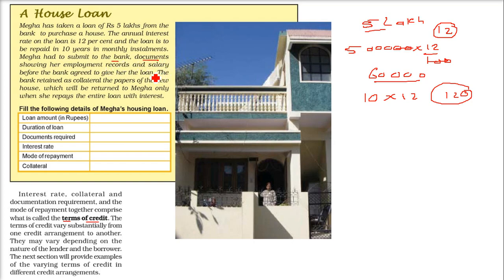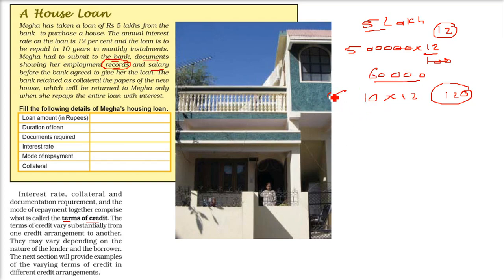Megha has to submit documents to the bank showing she has employment and a salary, because the bank needs to confirm she has a source of income. The bank retains the house papers as collateral. The bank will only disburse the money once all the terms of credit are fulfilled, and the house papers will be returned to Megha only after the loan is fully repaid. For the 10 years of repayment, the papers remain with the bank.